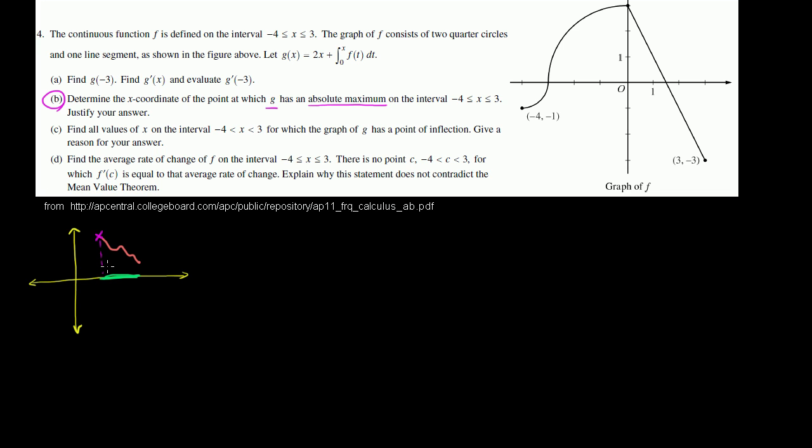A function's absolute maximum could occur at the beginning of the interval, or at the end point of the interval. Or the maximum could be at a critical point — and I say critical point as opposed to just a point where the slope is 0, because the function might not be differentiable there. So we just have to evaluate g at the endpoints and at any critical points in between.